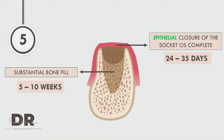Even though the bone gets substantially filled in about five to ten weeks — around two to two and a half months — is this bone mature enough to place implants? That is totally going to depend on where the bone is located: whether it's in the mandibular arch, whether it's a cortical or cancellous replacement, and how much native bone is present at the base. When we discuss immediate implant placements, all these terminologies and techniques will be of prime importance.